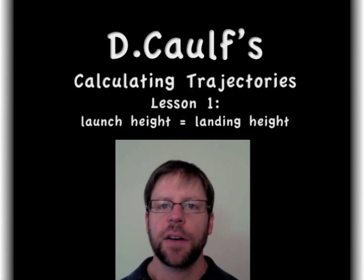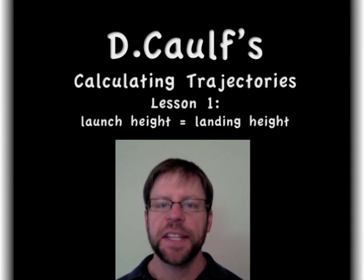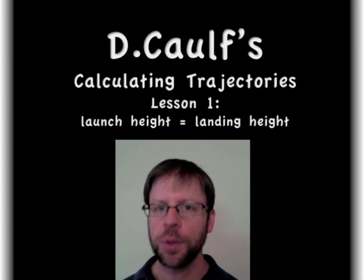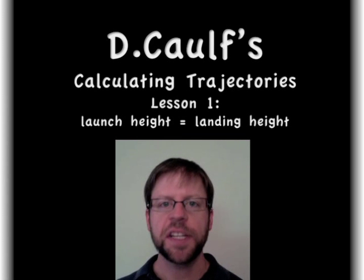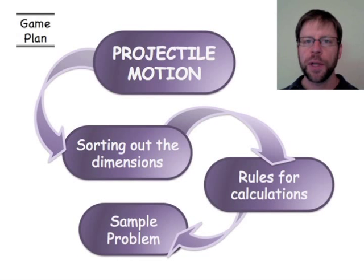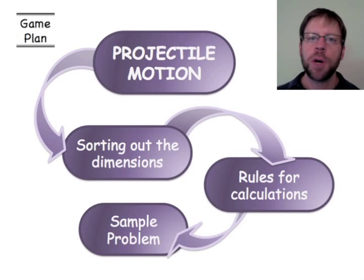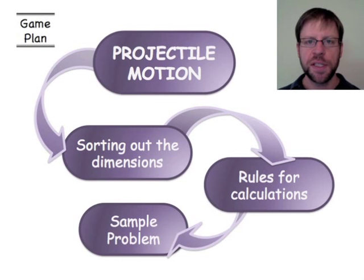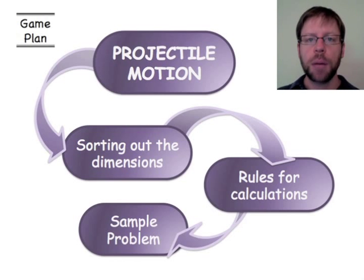Today we're going to look at calculating trajectories. This video is specifically for situations where the launch height of an object is equal to the height it lands at. I will do a separate standalone video for situations where the launch height differs from the landing height. The sequence for today: first, sorting out dimensions of a two-dimensional problem, then some rules for calculations, and finally a sample problem.